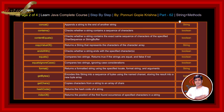concat method appends a string to the end of another string. contains method checks whether a string contains a sequence of characters. contentEquals method checks whether a string contains the exact same sequence of characters of the specified character sequence or string buffer.